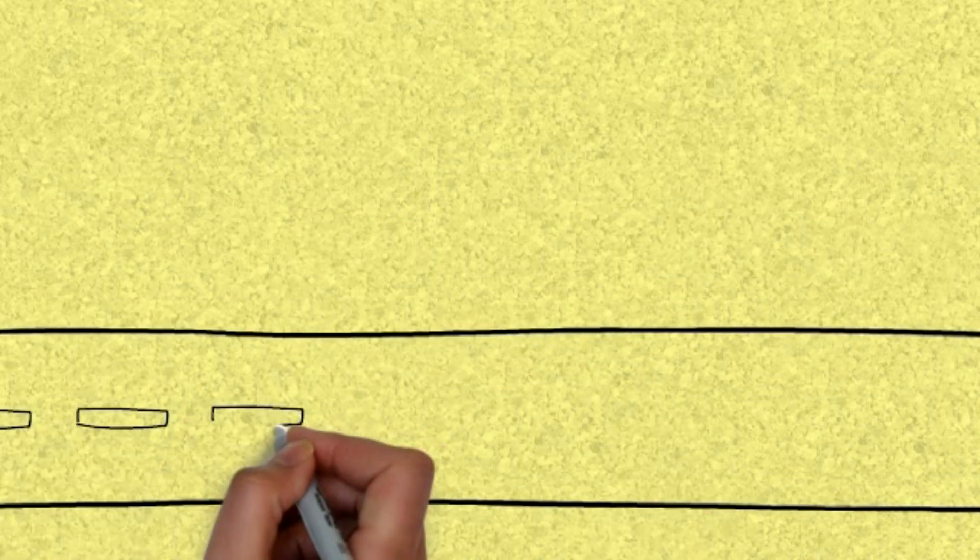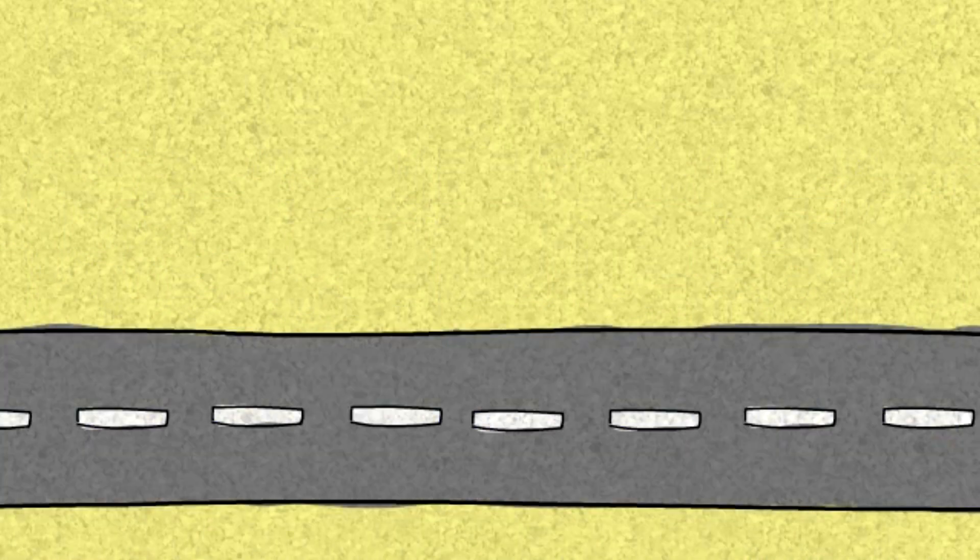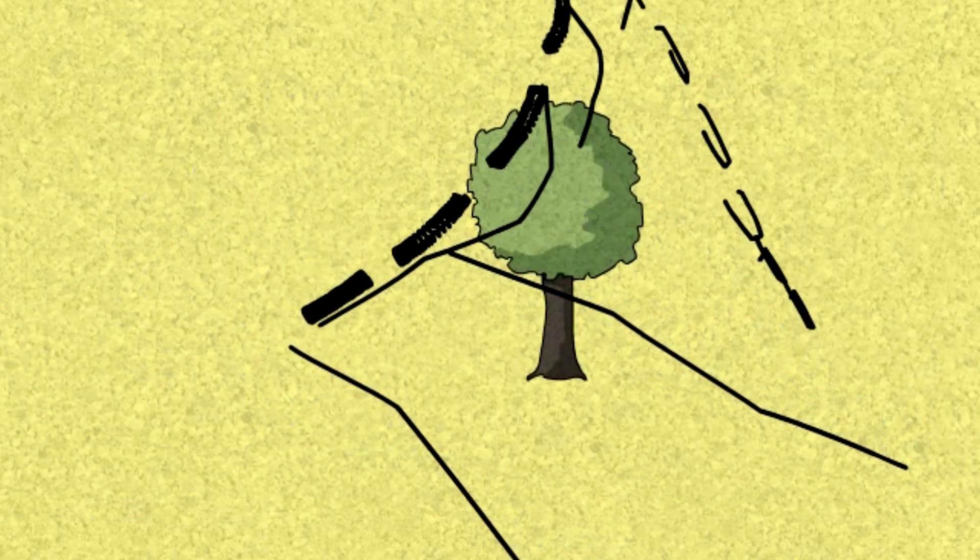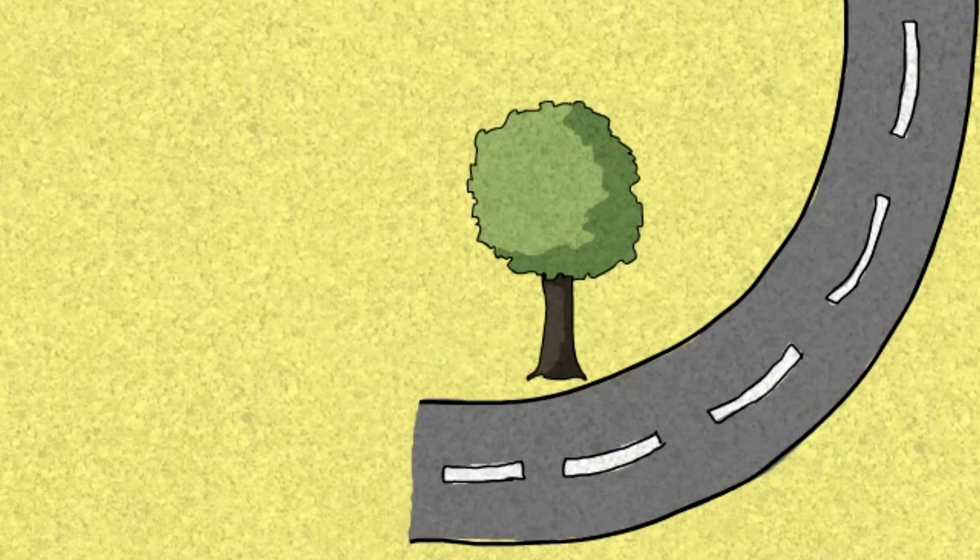Consider this analogy. So, suppose you want to build a straight road, but there happens to be a tree in the way. What you would do is build the road with a curve around that tree like this.